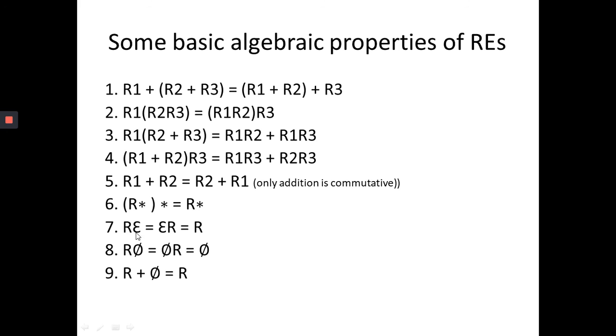Then, R epsilon is epsilon R, that means only your R will remain. Then, R phi or phi R, that is, when you have followed by or in previous you are having phi, then your resultant will be phi. Then, R union with phi will be R. These are some regular algebraic properties you should remember when working on regular expressions.